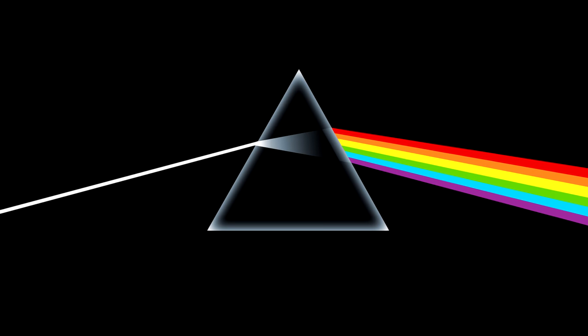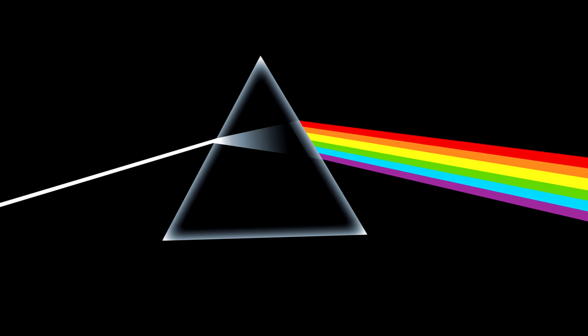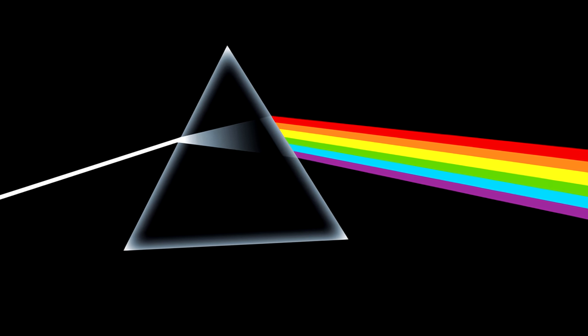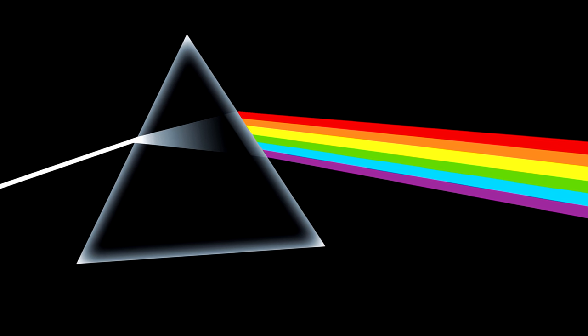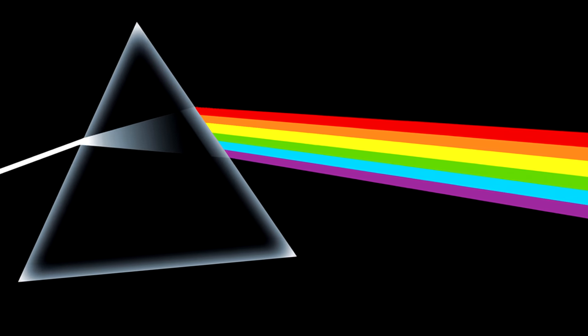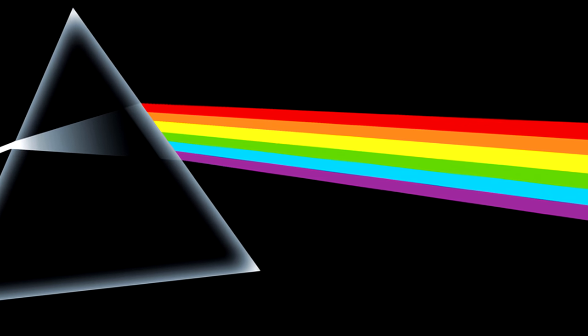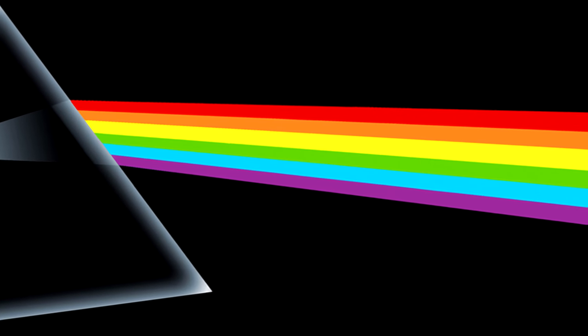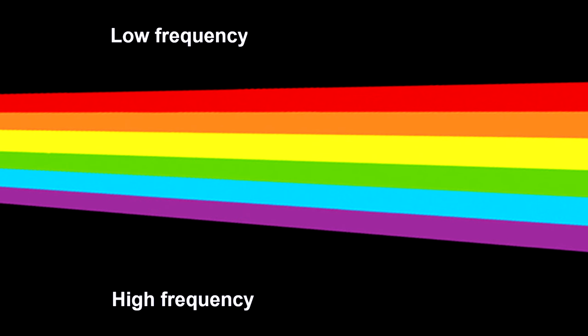Newton showed that the sun's light can be dispersed into the colors of the rainbow with a crystal. This effect comes from the wave nature of light. Different colors represent different light frequencies. The higher the frequency, or inversely, the shorter the wavelength, the more it's bent by the crystal.